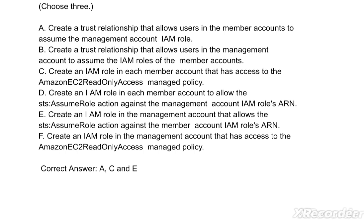Options are: A) Create a trust relationship that allows users in the member accounts to assume the management account IAM role. B) Create a trust relationship that allows users in the management account to assume the IAM roles of the member accounts. C) Create an IAM role in each member account that has access to the Amazon EC2 read-only access managed policy. D) Create an IAM role in each member account to allow the STS AssumeRole action against the management account IAM roles ARN. E) Create an IAM role in the management account that allows the STS AssumeRole action against the member account IAM roles ARN.